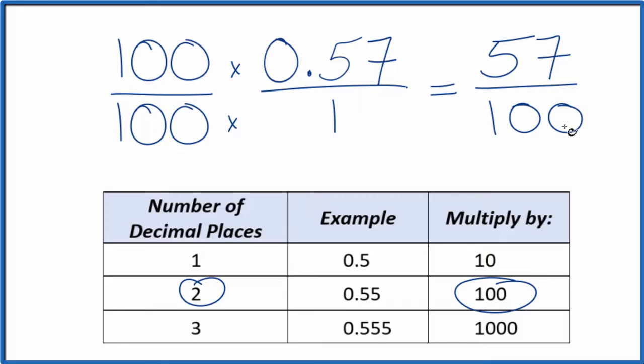We can't simplify this any further, so this is our fraction. If you divide 57 by 100, you'll get 0.57. This is Dr. B.